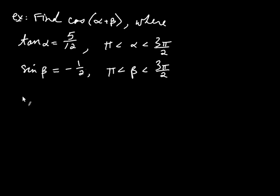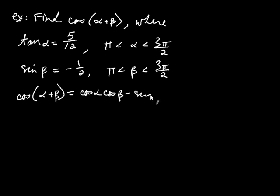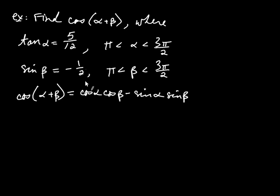The sum formula says cosine of alpha plus beta equals cosine of alpha times cosine of beta minus sine of alpha times sine of beta. We can get these quantities using the given information. The good news is we already know one of them — sine of beta is negative 1/2. What we still need to find are sine of alpha, cosine of alpha, and cosine of beta.